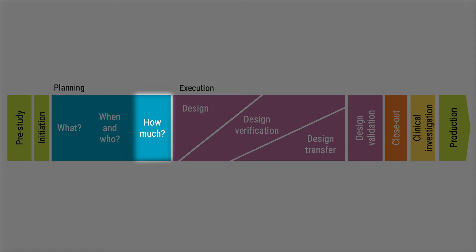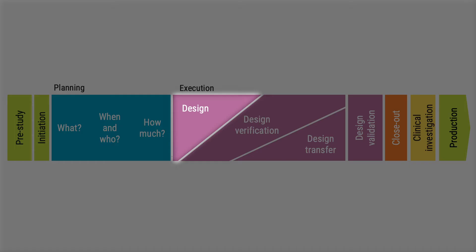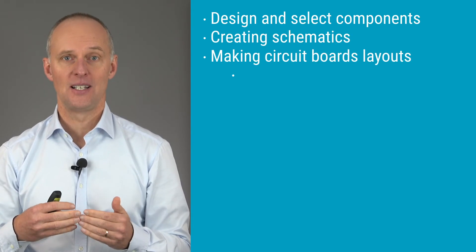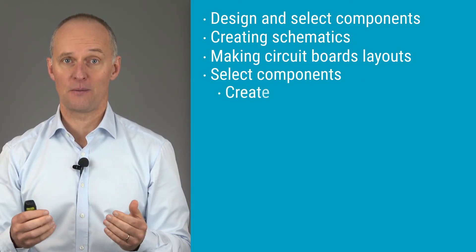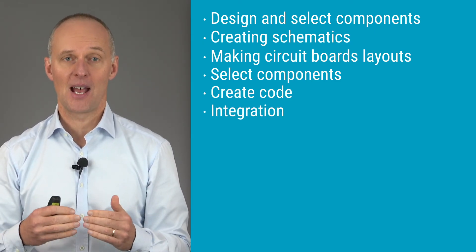After planning, the next step is execution and design. Design is the phase focused on creating the design and is always the first thing to do in the execution phase. For a mechanical device, design means designing parts and selecting components. For electronics, it means creating schematics, making circuit board layouts, and selecting components. For software, the goal is to create the code. For a complex system, it would be doing all of the above and integrating them as a system.